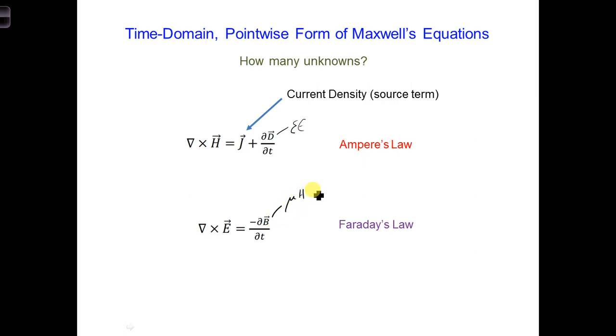It turns out now we have two equations and two unknowns, where our unknowns we could choose either, usually E and H, or B and D, usually.